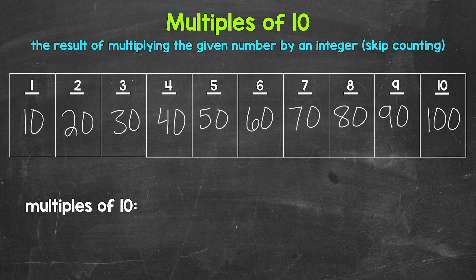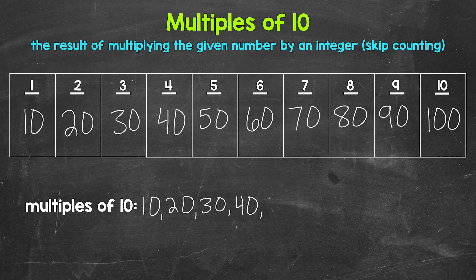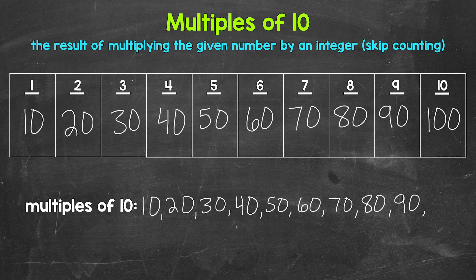Now let's write these multiples in a list below. And you'll notice we are just counting up by 10. Like I mentioned earlier, another way to think of multiples is to skip count. So we have 10, 20, 30, 40, 50, 60, 70, 80, 90, 100, and these continue on. So there you have it.